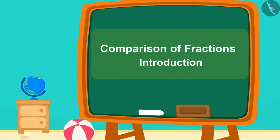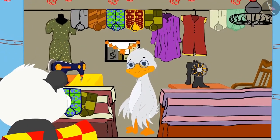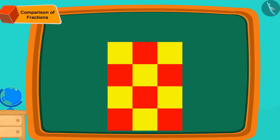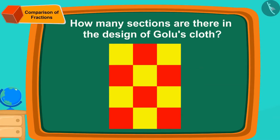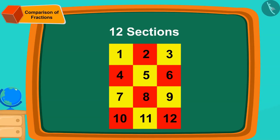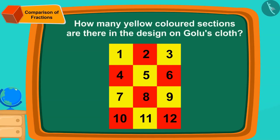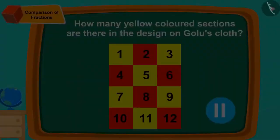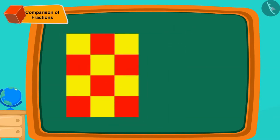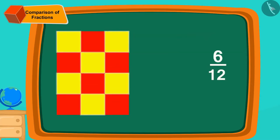Children, in this video we will learn to identify and compare fractions. Golu has got a cloth of a certain design at Cha-Cha's shop today and wants to get a trouser stitched. Children, can you tell how many sections are there in the design of Golu's cloth? Yes, twelve sections. Can you tell how many yellow colored sections are there? If you wish to, you can stop the video and find the answer. In Golu's design, six sections are filled with yellow color. Yellow colored sections are six twelfths of the design.